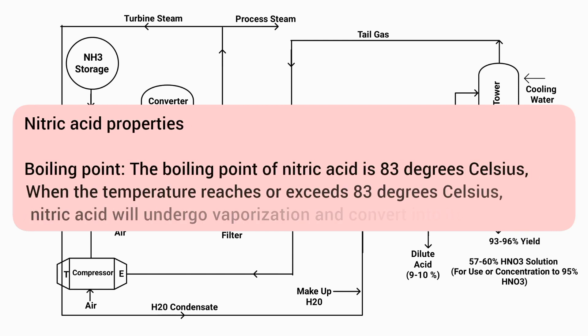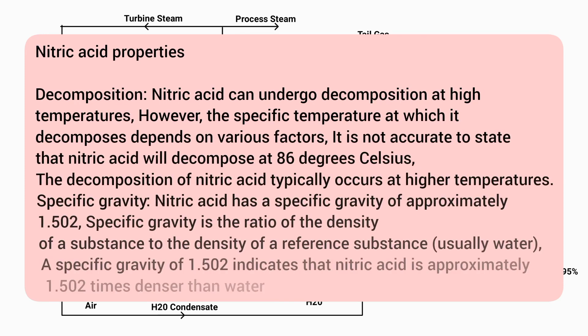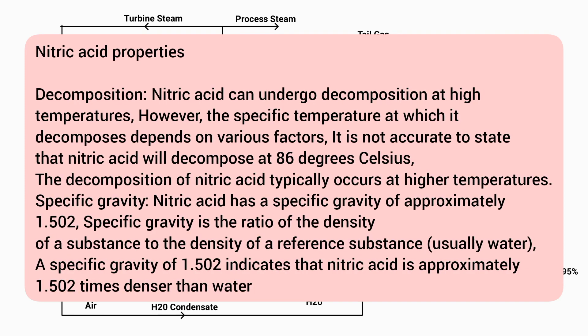Boiling point: the boiling point of nitric acid is 83 degrees Celsius. When the temperature reaches or exceeds 83 degrees Celsius, nitric acid will undergo vaporization and convert into its gaseous state. Decomposition: nitric acid can undergo decomposition at high temperatures; however, the specific temperature at which it decomposes depends on various factors. The decomposition of nitric acid typically occurs at higher temperatures.